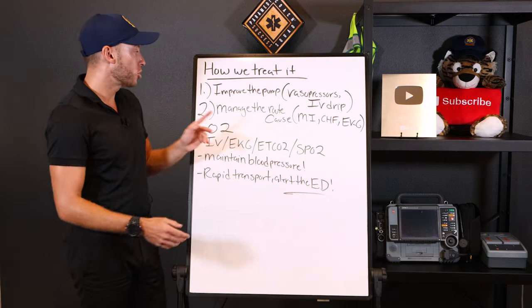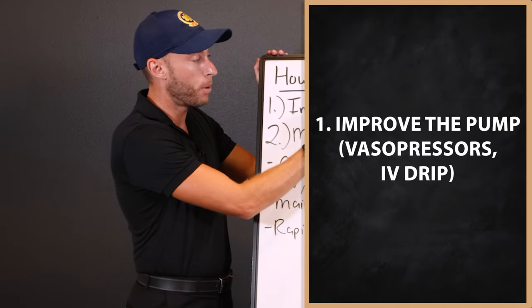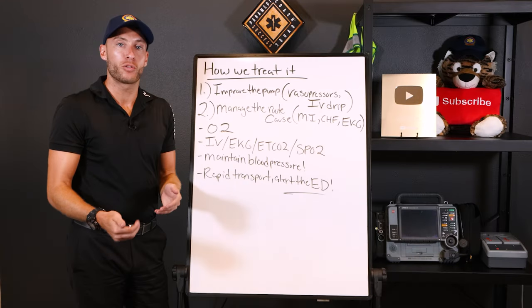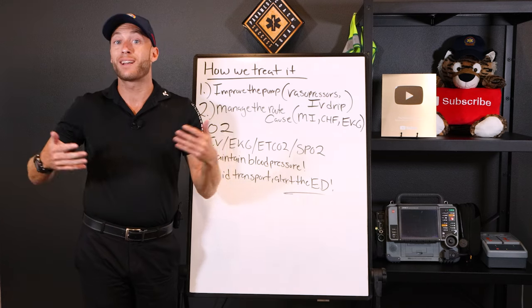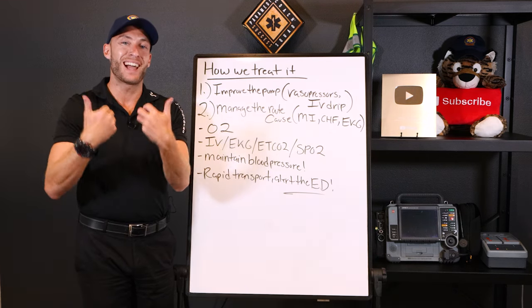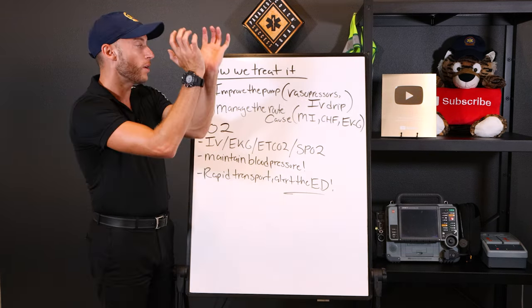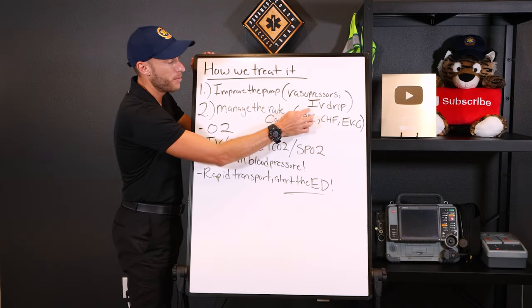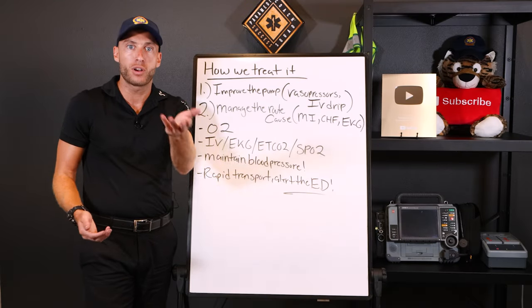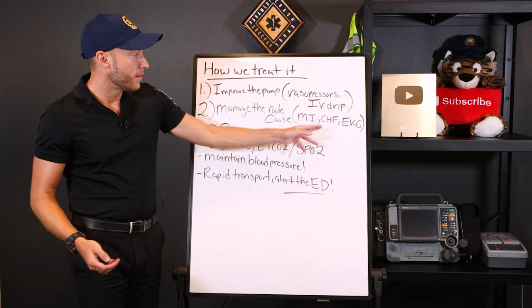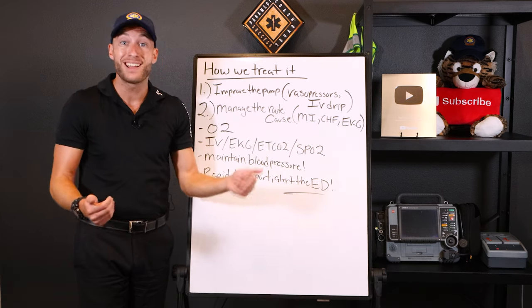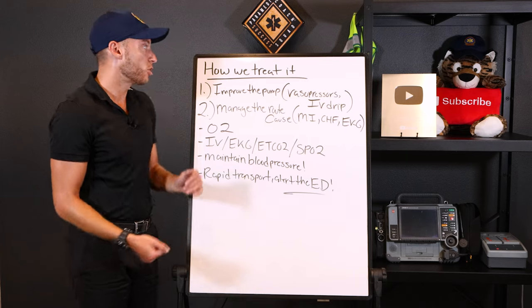The next step is cardiac rest. First, we need to improve the pump — the heart is failing, and if we improve the pump, we fix the issue. We do this by using vasopressors. What vasopressor you use will be determined by the protocol in your area — examples include epi or norepinephrine. Vasopressors will vasoconstrict and improve blood pressure, given via IV drip. Second, manage the root cause. If the patient is in cardiogenic shock due to a heart attack, fix the blockage. If it's CHF, treat the CHF pathway. If it's an MI, treat the heart attack pathway. If it's an EKG disturbance, fix the EKG and you fix the shock.